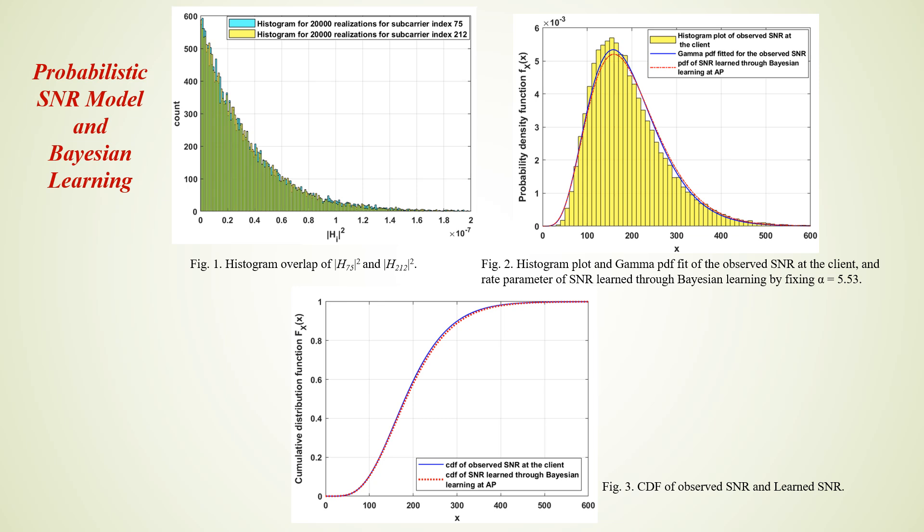Both parameters must be learned, as the gamma distribution has a shape parameter and a rate parameter. Ideally both must be learned, but the literature indicates that learning both parameters is hard. The conjugate prior for the gamma rate parameter is known to be gamma distributed, but there exists no standard distribution which behaves as a prior for the shape parameter. So we decided to keep the shape parameter fixed and learn the rate parameter through Bayesian learning.